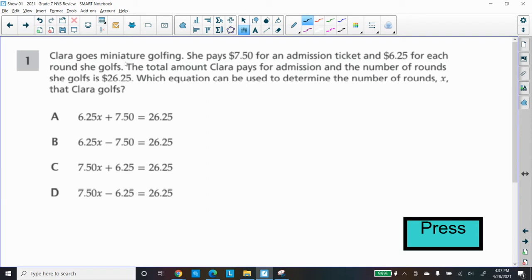Clara goes miniature golfing. She pays $7.50 for an admission ticket and $6.25 for each round of golf that she golfs. The total amount Clara pays for admission and the number of rounds she golfs is $26.25. Which equation can be used to determine the number of rounds called X that Clara golfs?